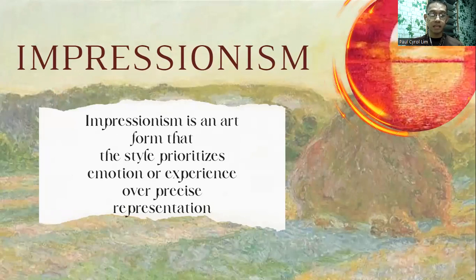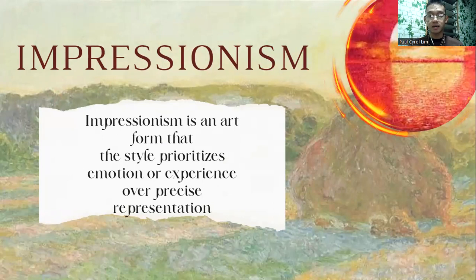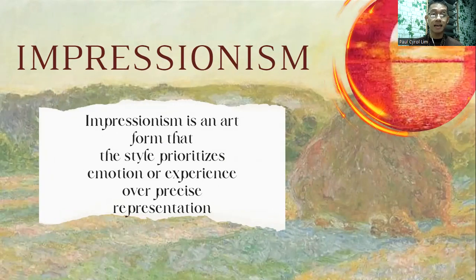Impressionism is an art form where the style prioritizes emotion or experience over precise presentation. At some point in the 1860s, a group of young artists decided to paint very simply what they saw, thought, and felt. They weren't interested in painting history, mythology, or the lives of great men, or they didn't see perfection in visual appearances. Instead, the Impressionists tried to capture on canvas an impression of how a landscape, thing, or person appeared to them at a certain moment in time.